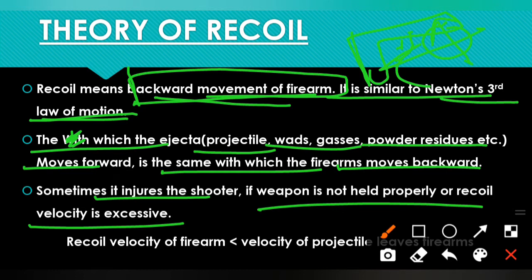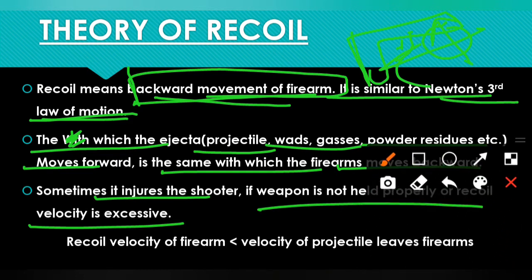If the recoil velocity is normal or excessive, you can see a bruise on your shoulder from firing. There will be redness and injury. These are the drawbacks which are injury causes. The recoil velocity is comparatively less than the projectile velocity.